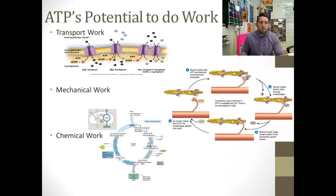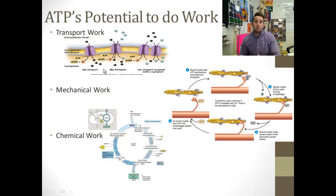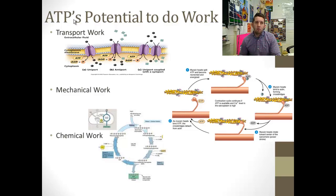Let's talk about what ATP does. ATP has the potential to do several kinds of work in your body. Number one: transport work — it can move things in and out of cells. Here's our phospholipid bilayer. It takes energy to move things against gradients; if you're going to move something from an area of low concentration to high concentration, or pump ions into or out of a cell, that requires energy. So transport work is one very important part of ATP's job description.